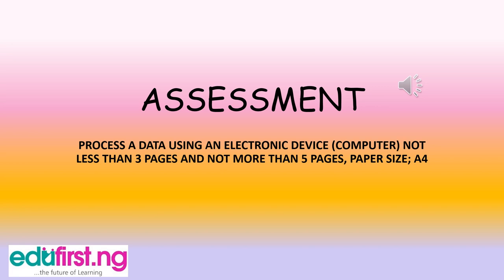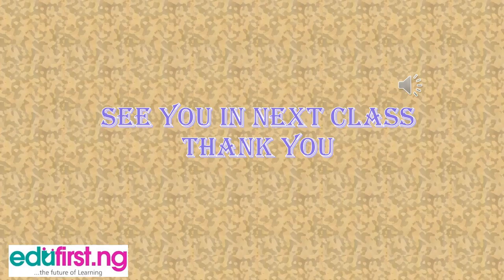So I believe you understand how data is being processed — right from the input stage after collection and preparation, then inputting, processing, and giving out the output as meaningful information. For your assignment, you will process data using an electronic device such as a computer or laptop. If you don't have one, you can use a smartphone. The assignment should be not less than three pages and not more than five pages, paper size A4. See you next class, thank you.